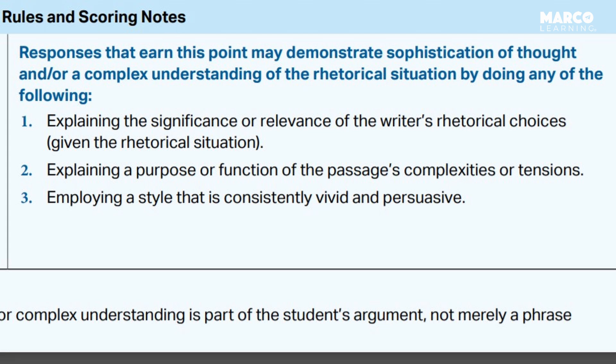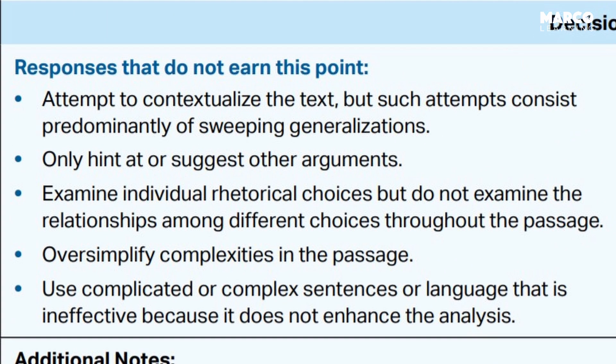It could be a combination of all three, or one and three, or just one. These are the three reasons the College Board has given to official readers to assign you the sophistication point. Now we can see some of the things that do not earn the sophistication point. The first bullet says you attempt to contextualize the text, but such attempts consist predominantly of sweeping generalizations. A sweeping generalization is a claim that's so vague it has nothing to do with the actual passage you're reading. Stay specific to the actual passage you're looking at, and you can avoid this problem.